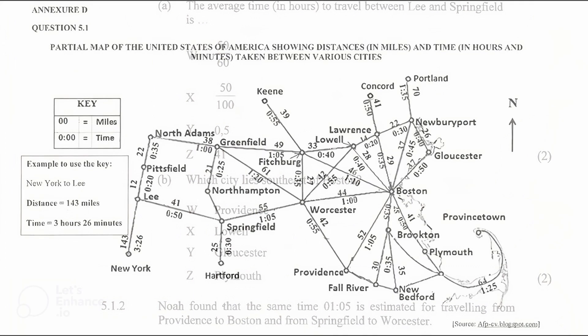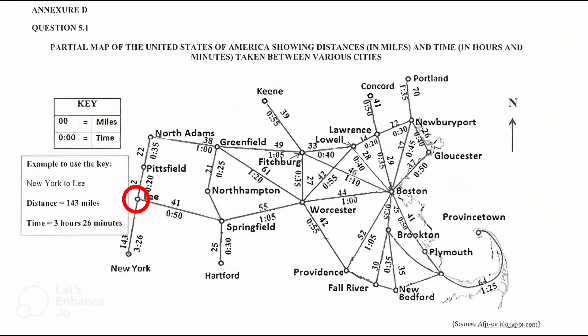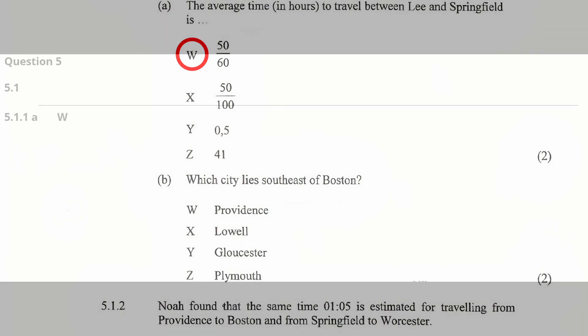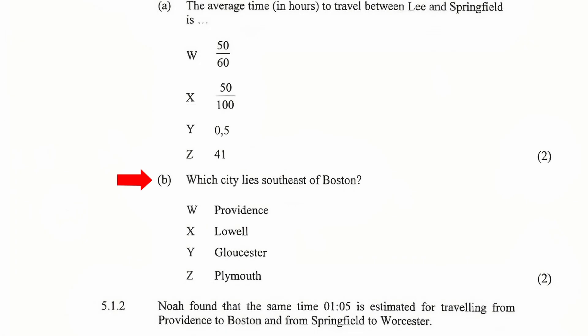From the map in Annex D, the traveling time between Lee and Springfield is 0 hours and 50 minutes. We know that there are 60 minutes in one hour, so the correct answer is 50 over 60. Therefore, the correct answer to 5.1.1(a) is W.